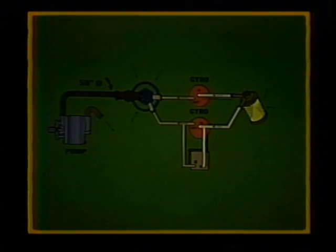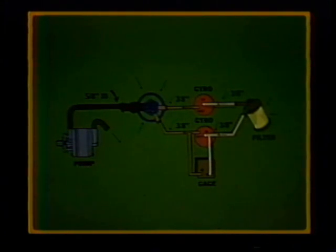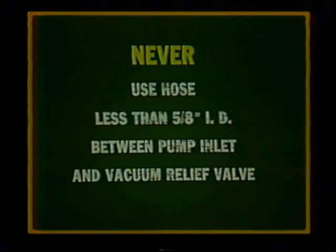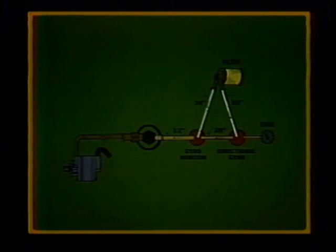In addition, the hose from the pump to the vacuum relief valve in a vacuum system should be no smaller than 5 eighths inch inside diameter. If the gyros are connected in parallel, each gyro should have a 3 eighths inch inside diameter connecting line from the central filter and to the relief valve. In a vacuum system, never use a hose less than 5 eighths inch inside diameter between the pump inlet and vacuum relief valve. When driving two gyros in series, always use a 1 half inch inside diameter hose from the relief valve to the artificial horizon first, then a 3 eighths inch inside diameter hose between the artificial horizon and directional gyro.